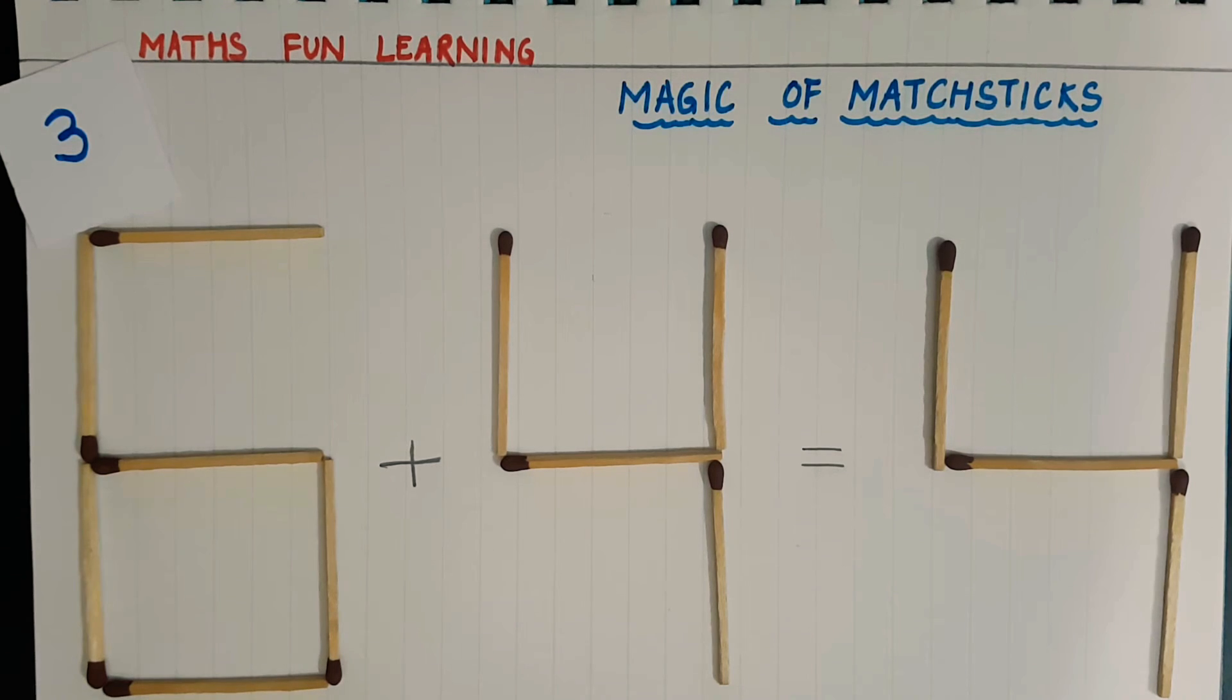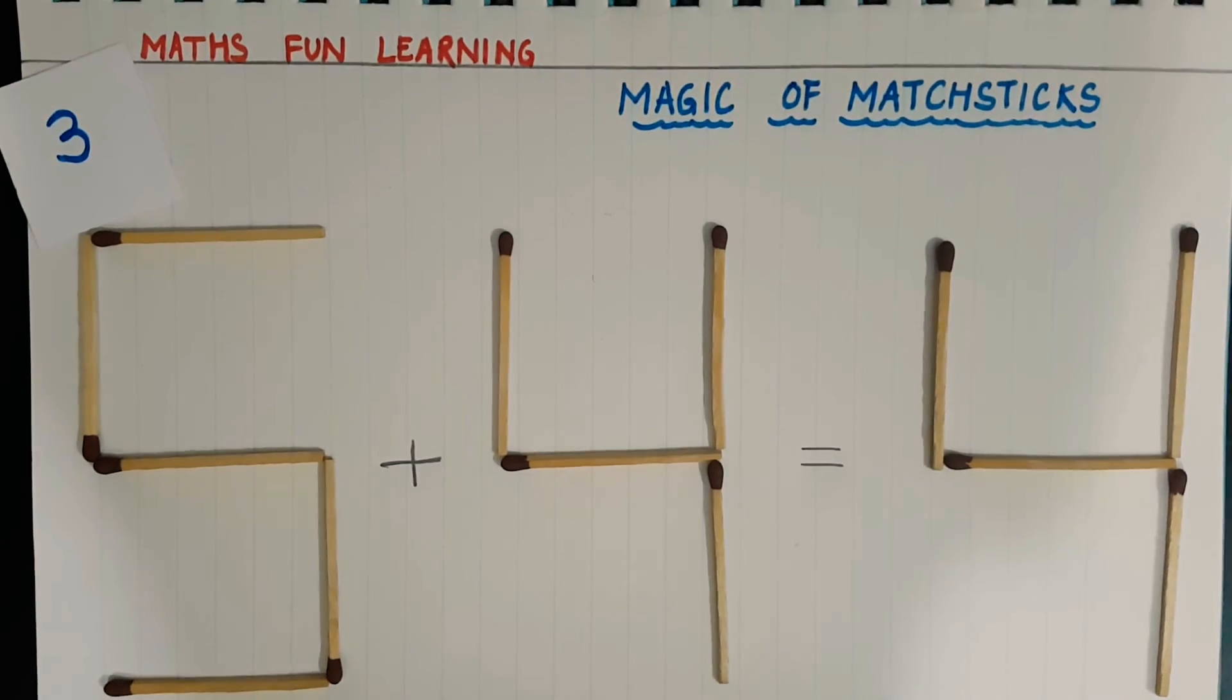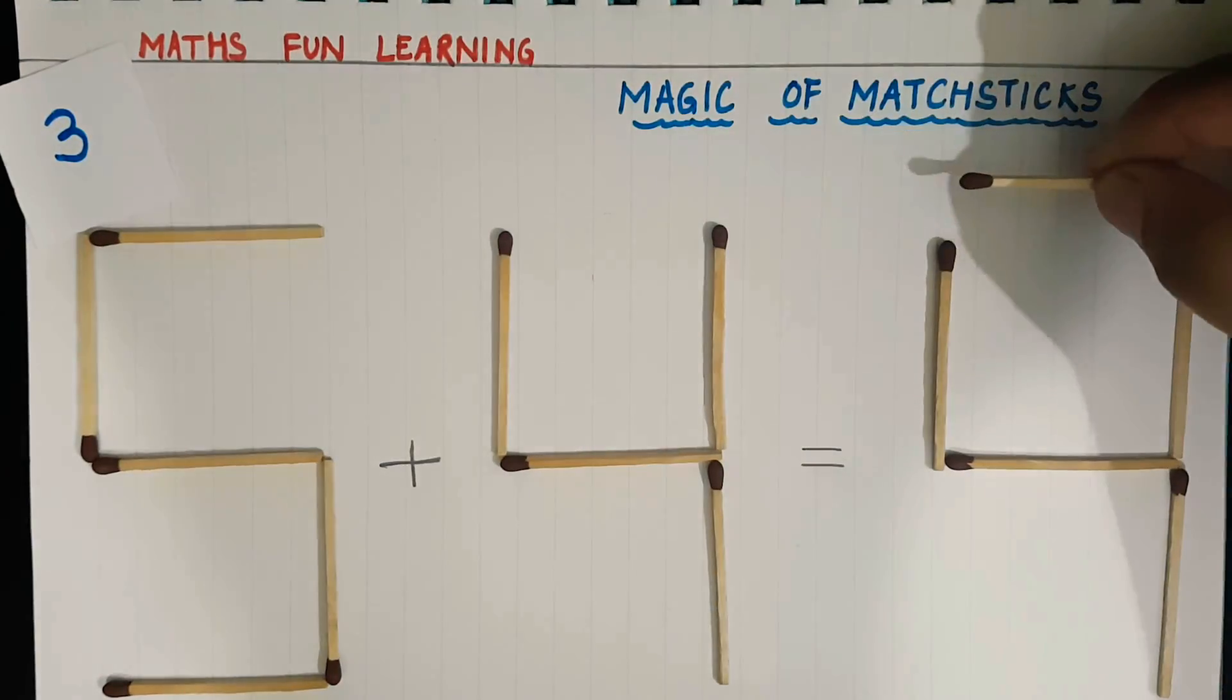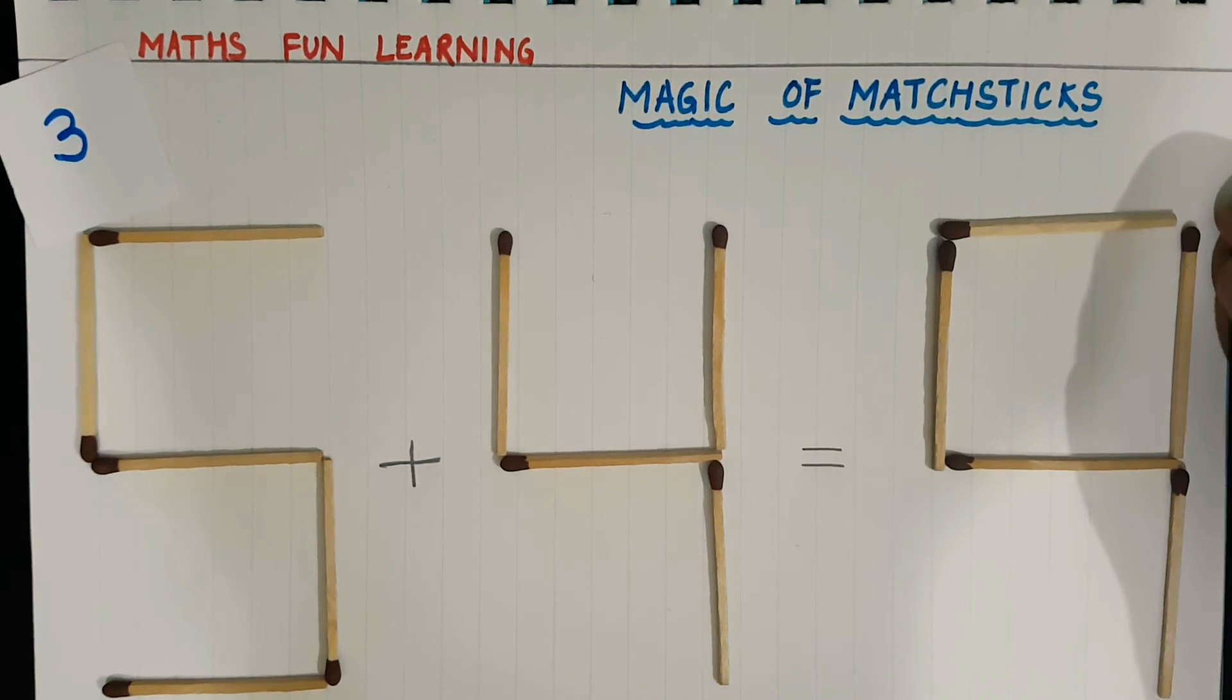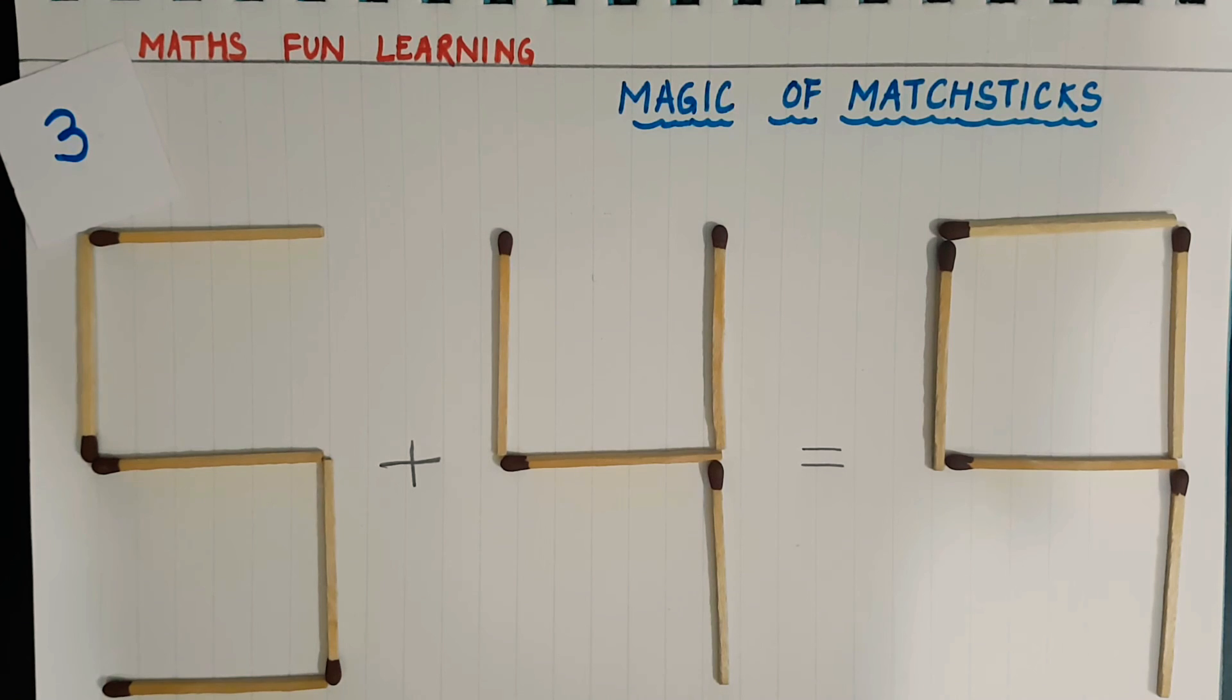So now it's your turn kids, think about it. How will we solve it? We have to move one matchstick. Yes, so this six is changing to a five and I move this matchstick to here. This four is changing to a nine. So five plus four gives nine. Five plus four equals nine. So that is the magic of matchsticks.